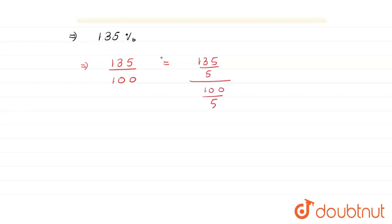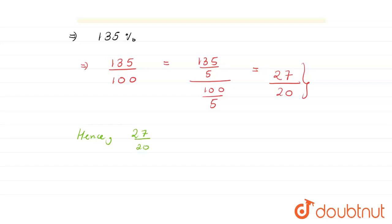So 135 divided by 5 becomes 27, and 100 divided by 5 becomes 20. No further simplification can be done. Hence, 27 divided by 20 is the required fraction.